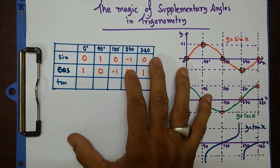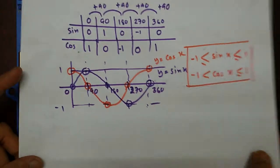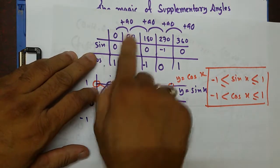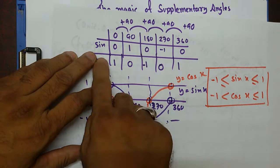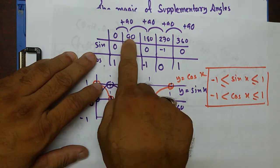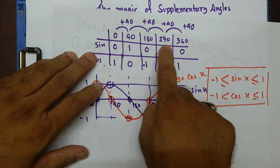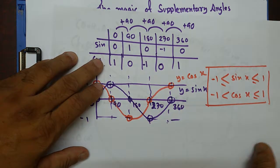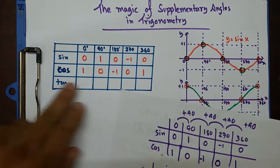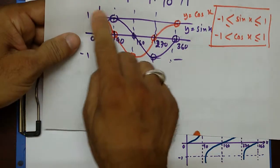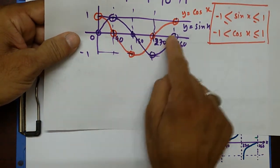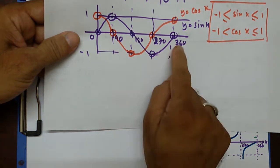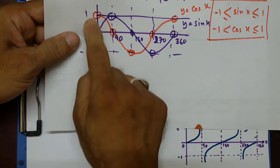In my last video, for the lecture I gave on the unit circle, you may have seen that sine theta, or sine x, when x equals 0°, 90°, 180°, 270°, and 360°, it gives certain values. Sine 0° equals 0, sine 90° equals 1. Keeping those values, I showed you the sine graph goes like this — this purple curved line — y equals sine x.